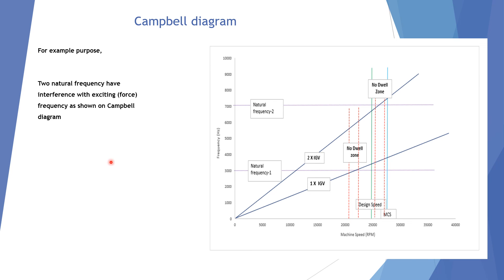Now, considering two natural frequencies and two exciting frequencies, there may be two points of intersection — one below design speed and another above design speed but below MCS. We need to consider both. The Goodman diagram is analyzed for each, and if not acceptable, we apply the no-dual zone logic accordingly so the machine is operated safely through those zones.